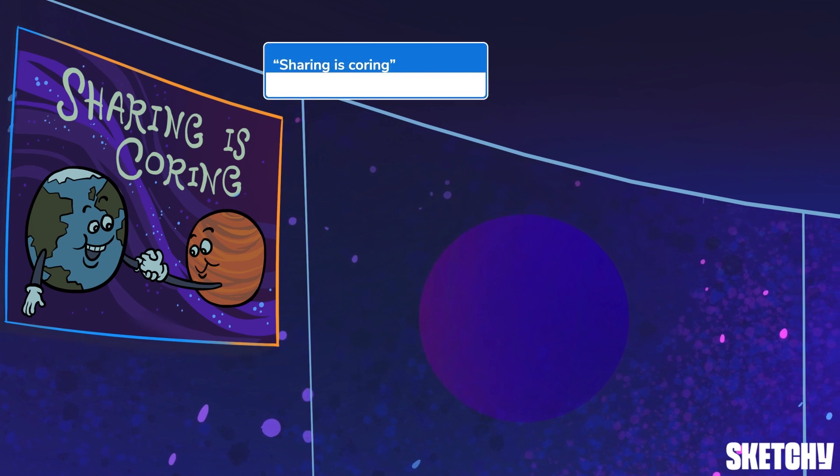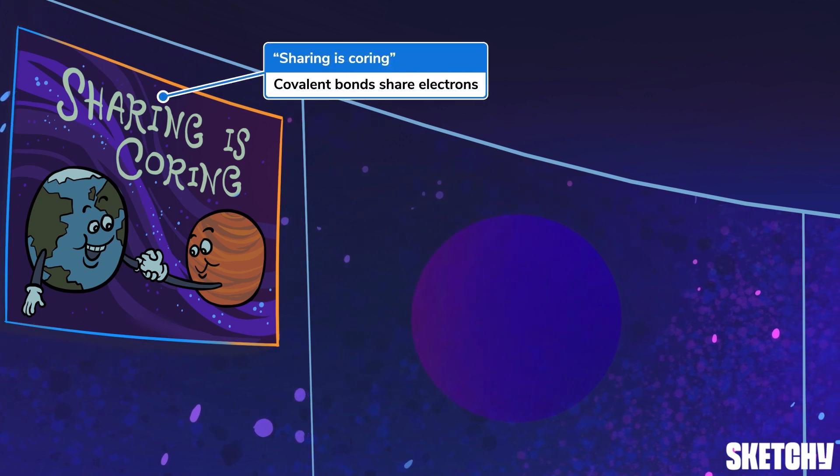But this 'Sharing is Caring' poster is mighty cheesy. Lucky for us, that typo should remind you that in covalent bonds, atoms are drawn together because they share electrons.